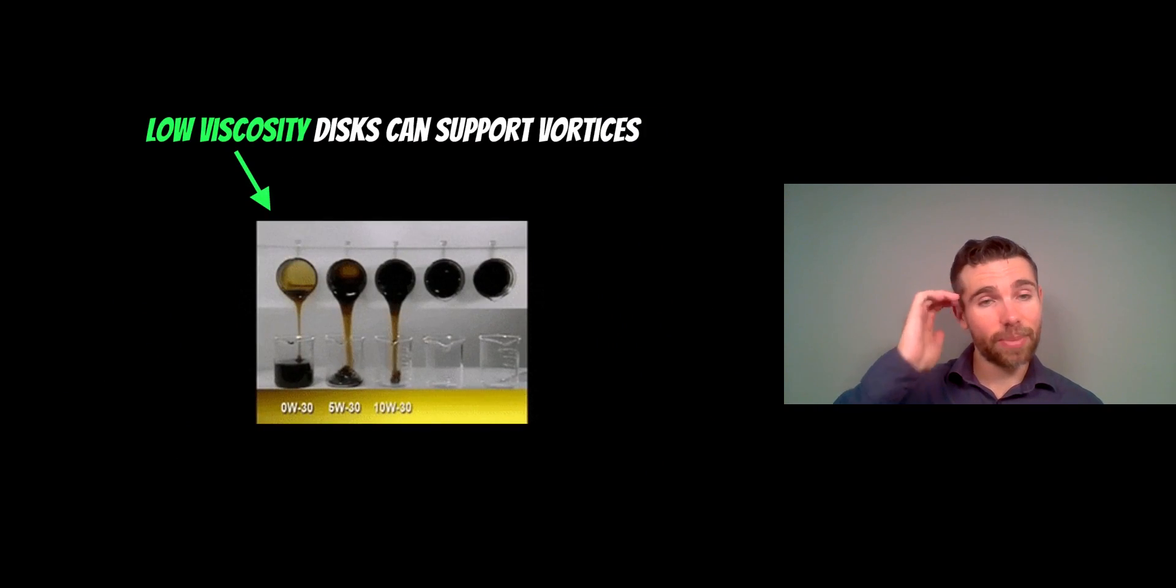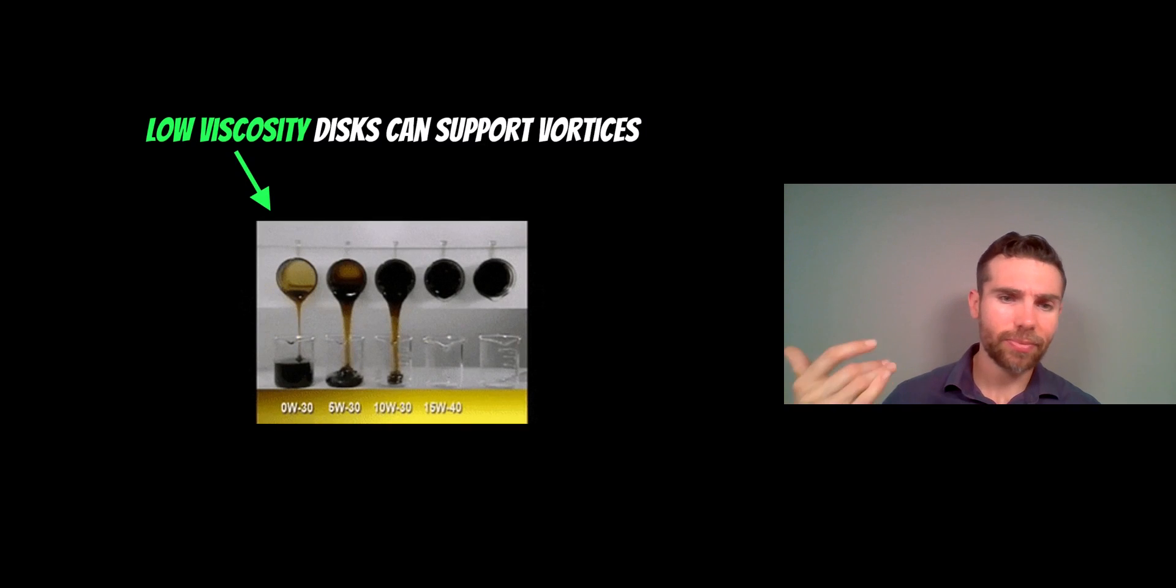So it's worth noting at this point about viscosity. Low viscosity disks can support vortices and a turbulent flow. What do we mean by viscosity? Well, as an example, you can see on the screen here. On the left hand side you've got a low viscous fluid, and on the right hand side you've got a much higher viscosity fluid, so it's a lot thicker. It probably makes sense looking at this that the low viscosity one is easier to get things like eddies and vortices and a more turbulent flow than the thicker one.